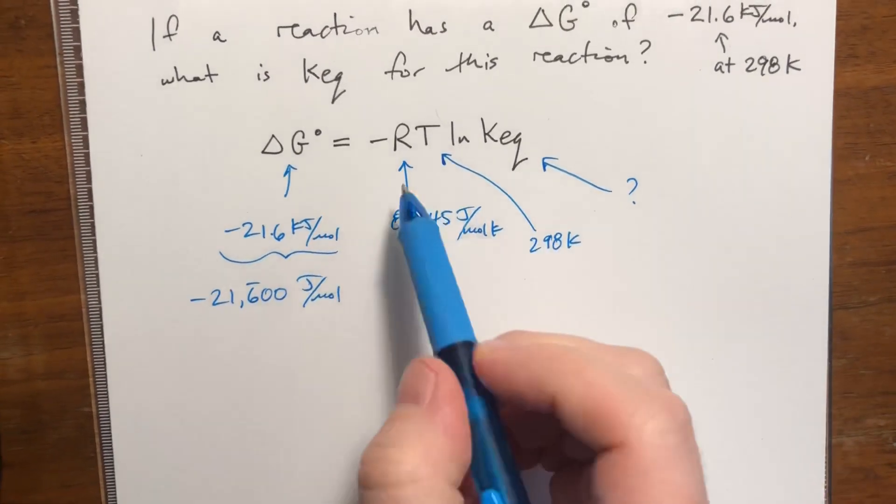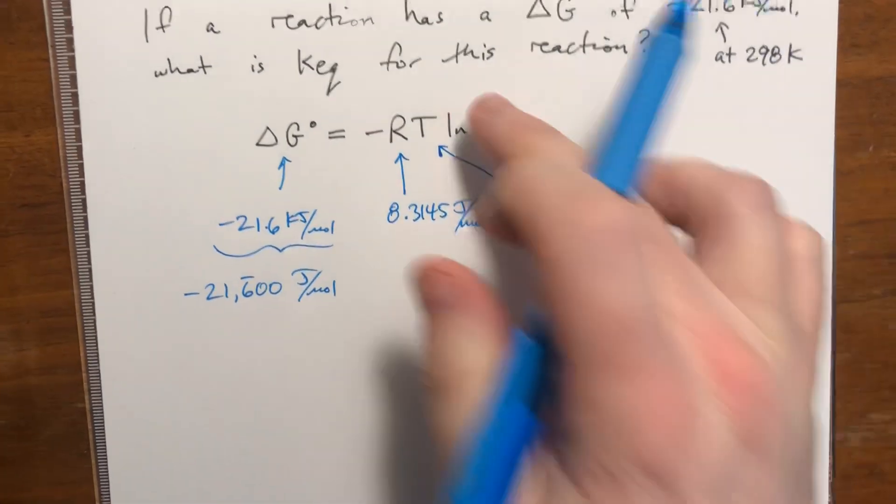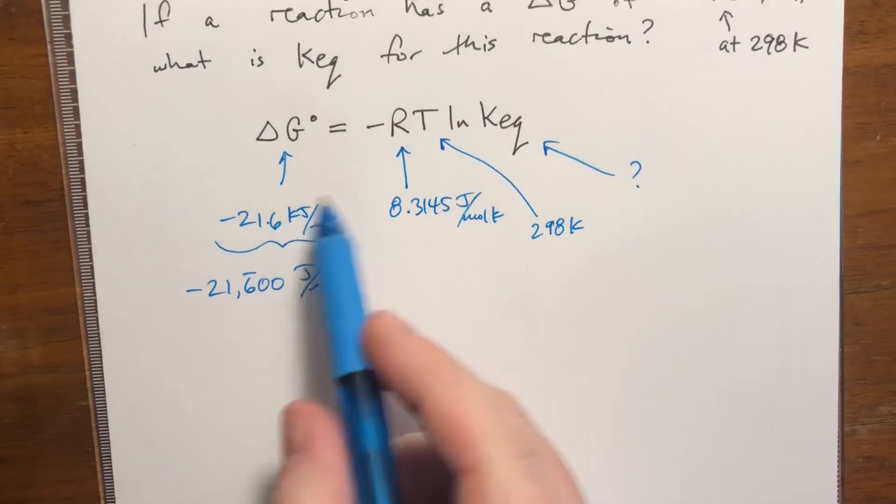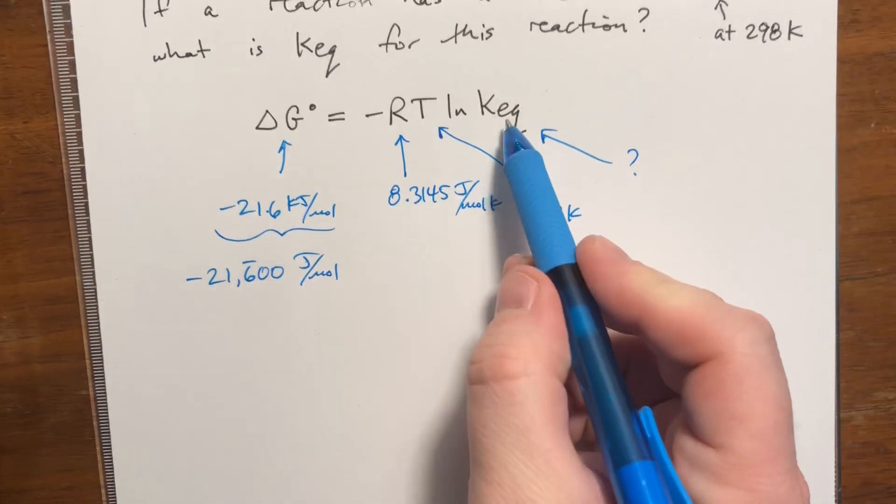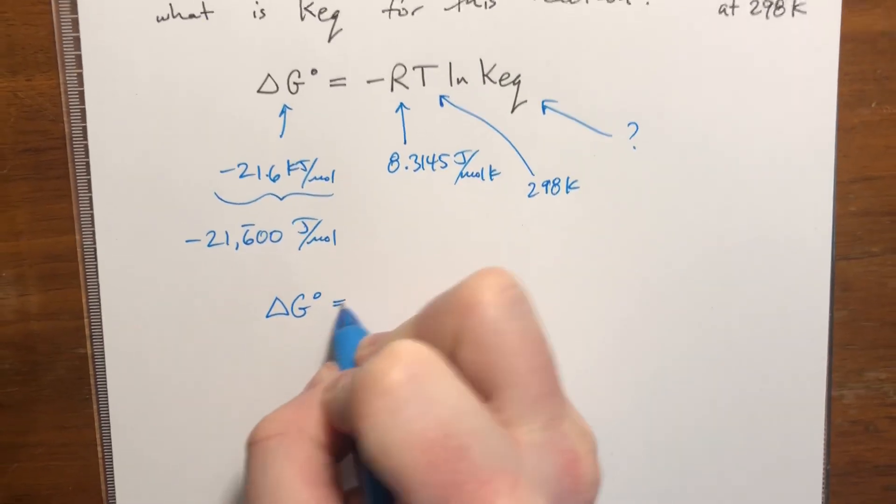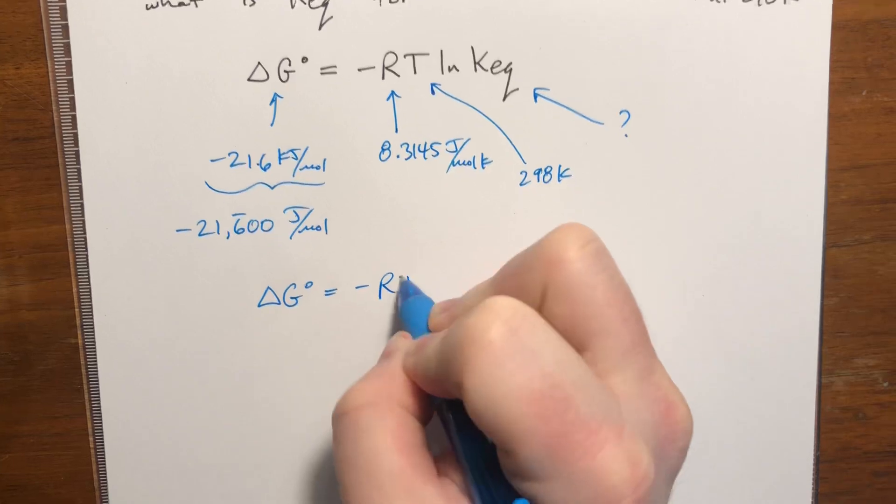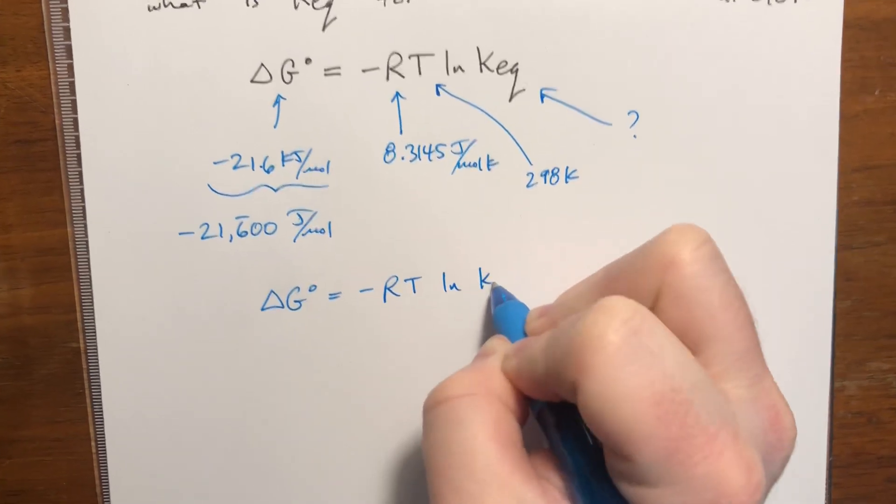So I'm actually going to do all my work before I plug any numbers in here. So we need to solve for Keq. So delta G, standard conditions, equals minus RT natural log of Keq.